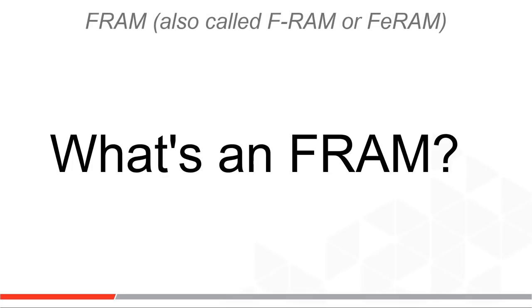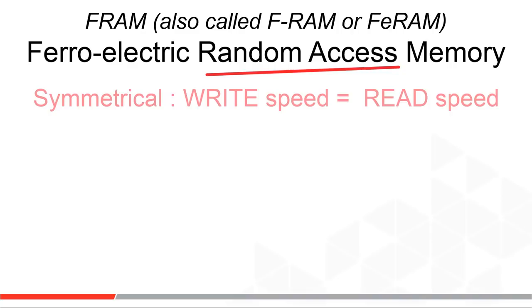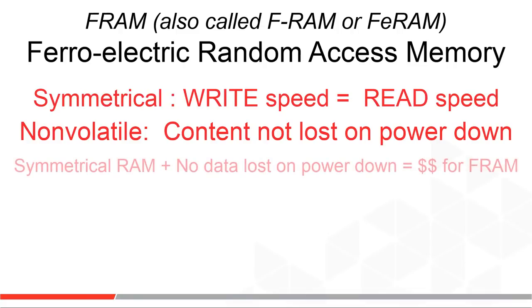FRAM, F-RAM, or F-ERAM all stand for Ferroelectric Random Access Memory. It is random access — just like an SRAM you can read and write and jump around the address locations symmetrically, which means you can read a byte of memory just as fast as you can write a byte. FRAM is non-volatile, which means the memory content is not lost when the power is turned off. This non-volatility is FRAM's key market value.